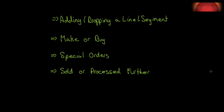We're going to look at a number of different scenarios — not meant to be inclusive, just representative of the types of decisions that could be made using this type of analysis. Adding or dropping a line or segment. Make or buy — should we make it internally or outsource? Special orders — should they be accepted or not? And finally, should we sell something as it is, or can we make more money by processing it further? Let's start with adding or dropping a line or segment.